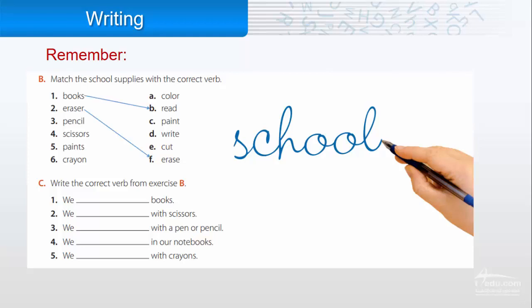C: write the correct verb from exercise B. We will use these verbs in the sentences. One: we books, read. Two: we with scissors, cut.